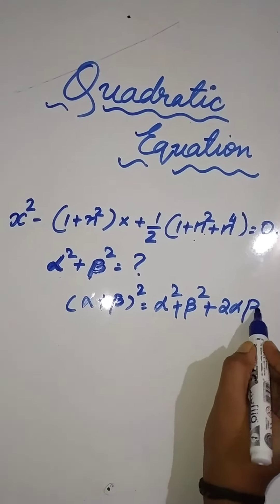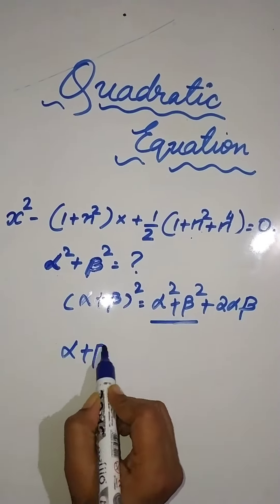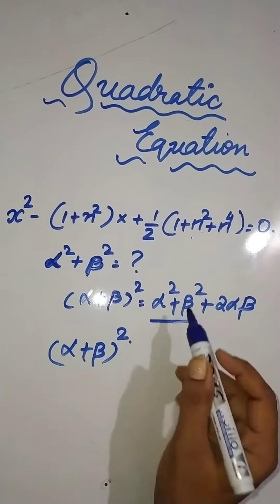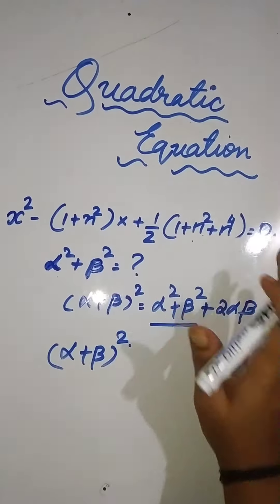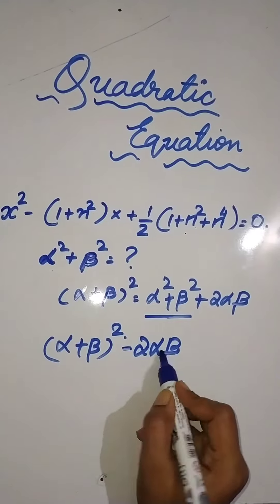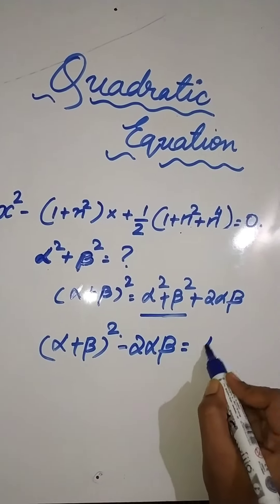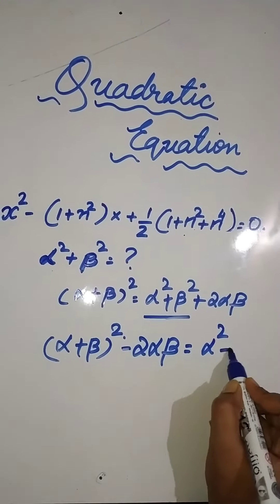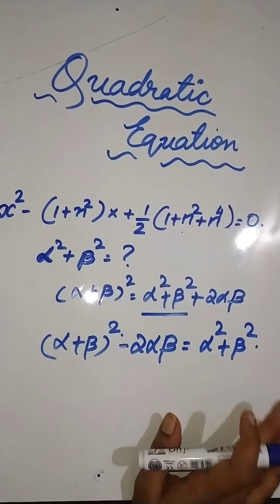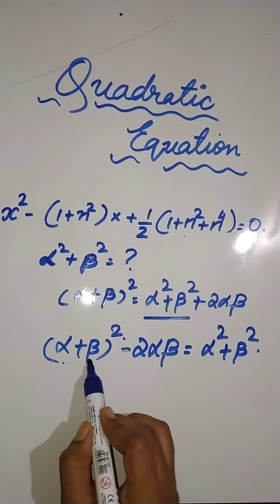So we have to find this value. Hence I will find (α + β)² using this equation, minus 2αβ. I will be finding α × β so that we can find the value of α² + β². So what is α + β?